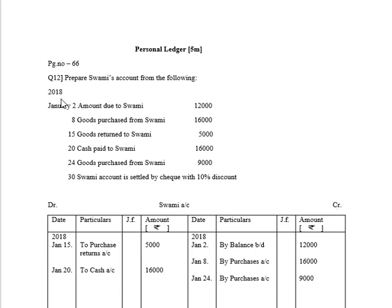The first transaction is on 2018 January 2nd: amount due to Swami, 12,000 rupees. In our previous problem it was 'amount due from Sudha' — Sudha was a debtor, it was an asset, and all assets have debit balance. This time the transaction is 'amount due to Swami,' meaning the business owes Swami money. It is a liability, and all liabilities have credit balance. So it will be recorded as: 2018 January 2nd, by Balance Brought Down, 12,000 rupees.